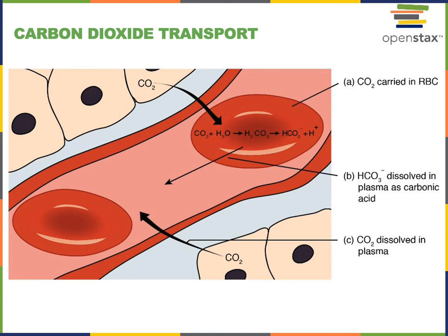Carbon dioxide binds to a different site on hemoglobin than oxygen does, but CO2 binding to hemoglobin has an important influence on the affinity of hemoglobin for oxygen. The majority of carbon dioxide reacts with water within the red blood cell in a reaction catalyzed by carbonic anhydrase, forming carbonic acid, which then loses a hydrogen ion forming bicarbonate — lowering the pH of the blood. The bicarbonate ion is the primary transport form of CO2, with around 70% of transported carbon dioxide converted into bicarbonate.